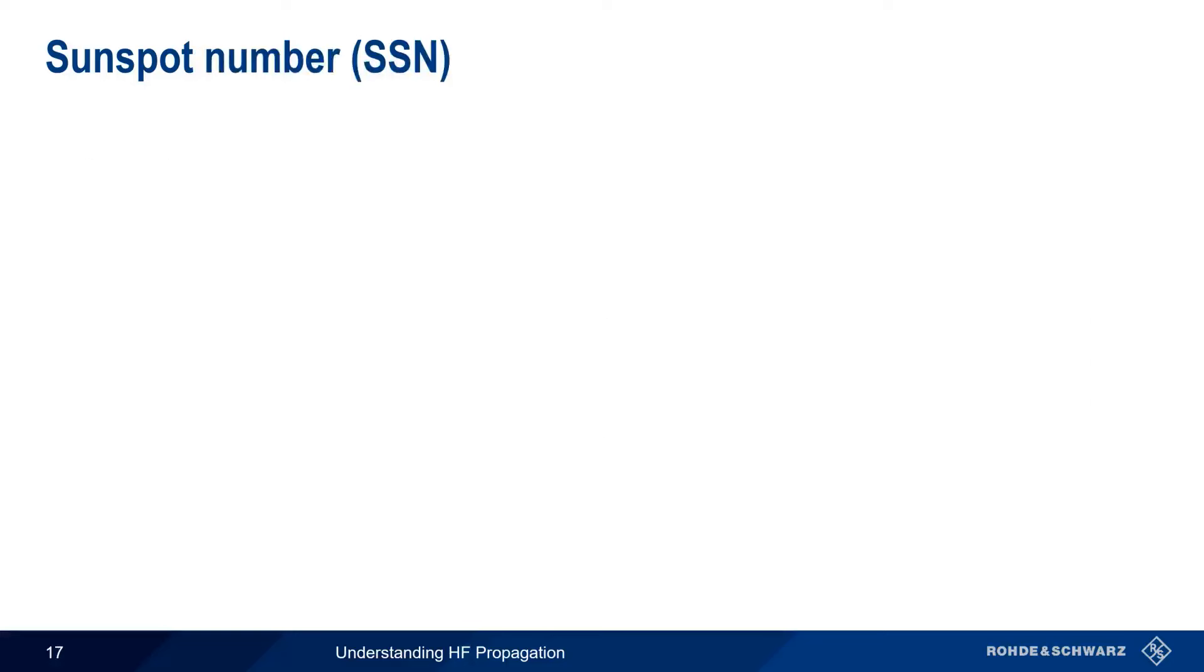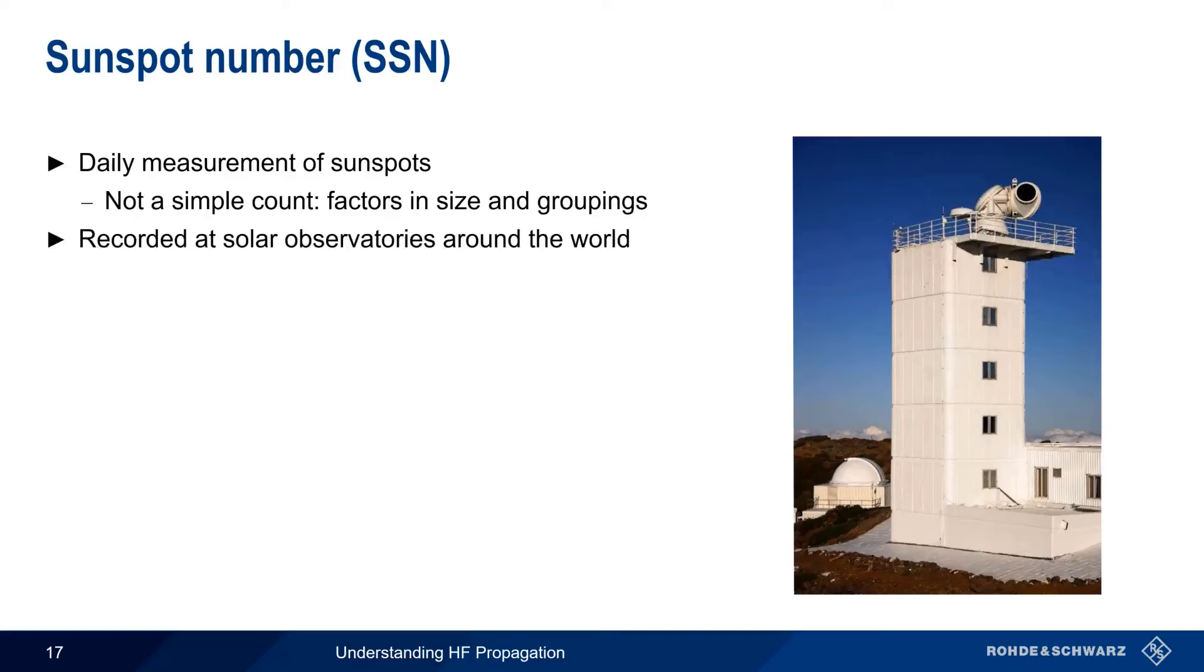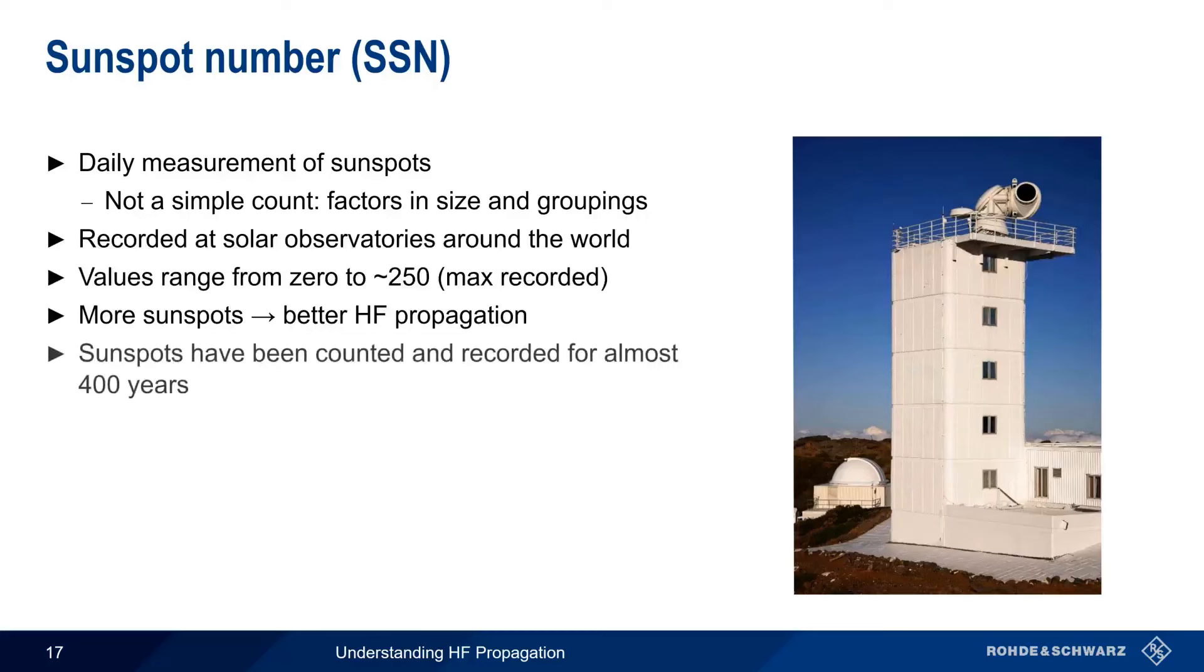The quantitative measure of sunspots is sunspot number, which is a daily measurement of sunspots. Note, however, that sunspot number isn't simply a count of the number of sunspots. It also takes into account additional factors, like the size and grouping of sunspots. Sunspot numbers are recorded by a number of solar observatories around the world, and sunspot number values range from zero to a maximum recorded value of about 250. As mentioned a moment ago, more sunspots, or a higher sunspot number, almost always means better HF propagation. It's also worth noting that sunspot data have been collected for almost 400 years, giving us valuable information on how the number of sunspots changes over time.